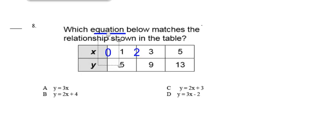Question 8. Which equation below matches the relationship shown in the table? Note that 0 and 2 have been inserted into the table to help you think about what would happen if it's counting by 1s. A: y = 3x. B: y = 2x + 4. C: y = 2x + 3. D: y = 3x − 2.